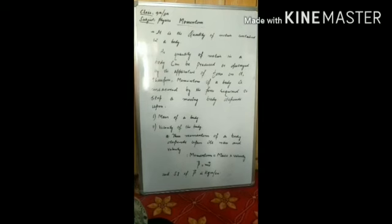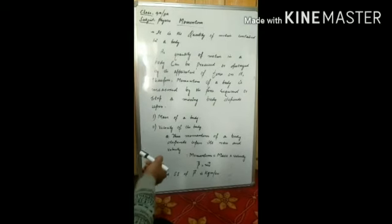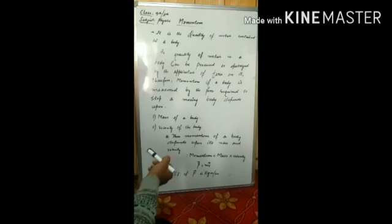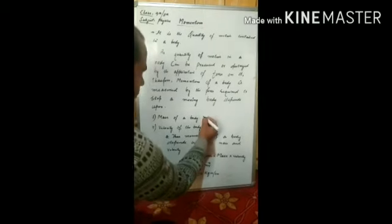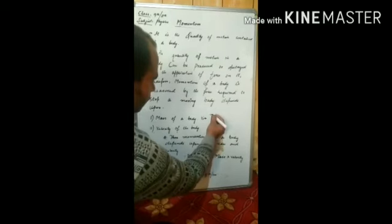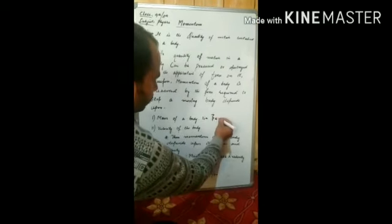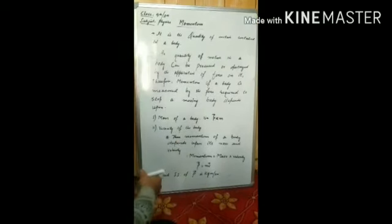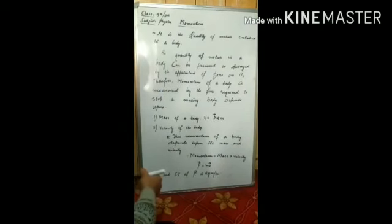So we can say, my dear students, the momentum of a body depends upon the mass. Heavier the body, more will be the momentum, as it is directly proportional to momentum. As we can see here, we can write momentum P is directly proportional to m. Greater the mass of a body, greater will be the momentum.